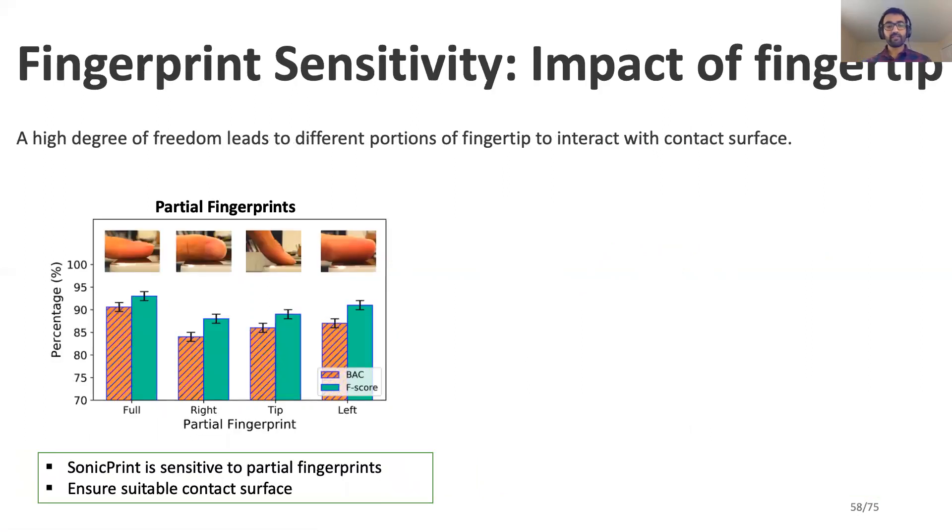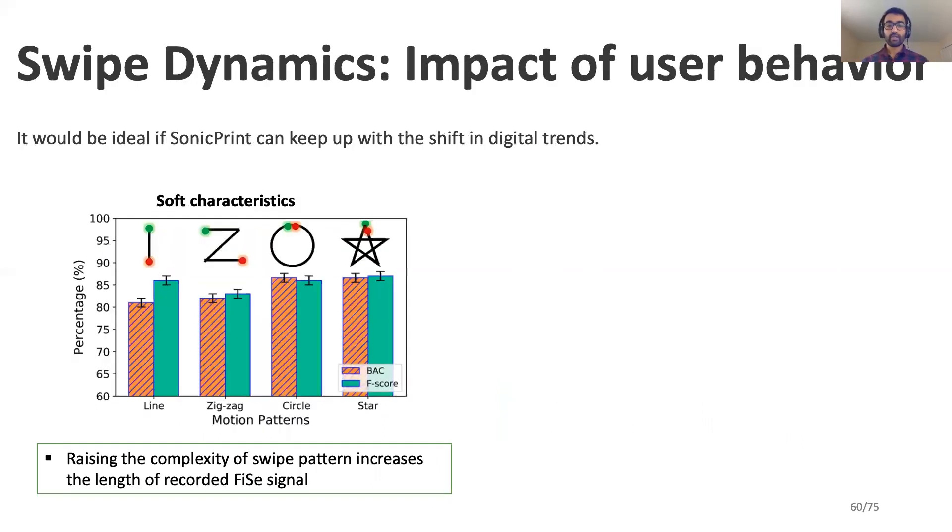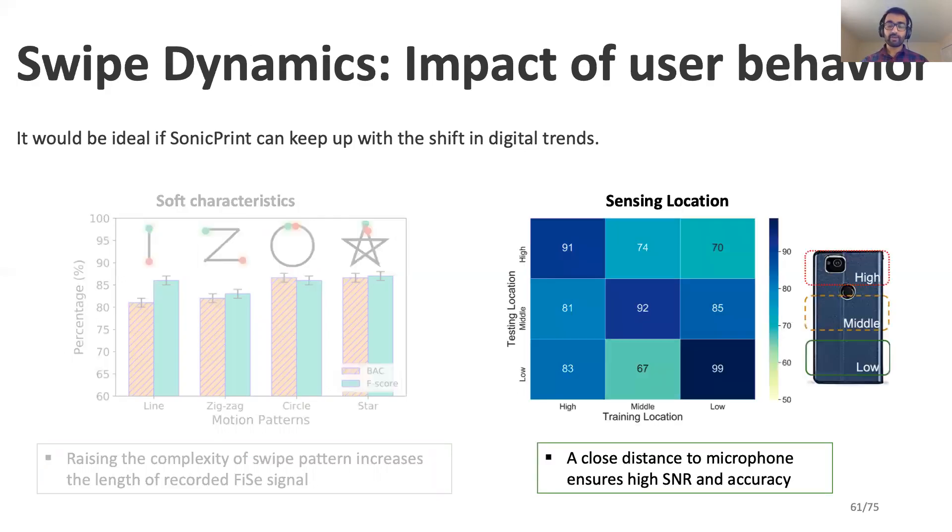We also found that SonicPrint is sensitive to partial fingerprints. However, its performance is adversely affected by the moisture level, which is same as current fingerprint scanners. We hope to explore this phenomenon in the future. SonicPrint can also provide flexibility to users in their swipe action. The performance increases as the complexity of the swipe action increases. This is because a highly complex gesture also elongates the duration of the sample, ensuring enough intrinsic information about the fingerprint. We imagine these soft characteristics can be further used to enhance the system performance. SonicPrint ensures that the sensing location can vary from low to high as we still observe good accuracy.